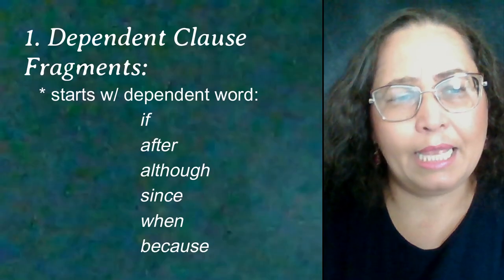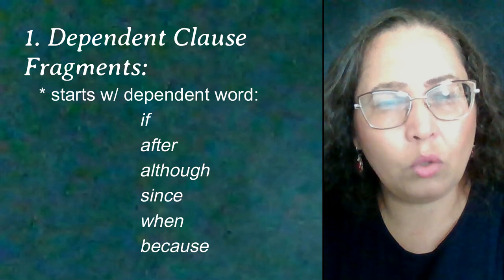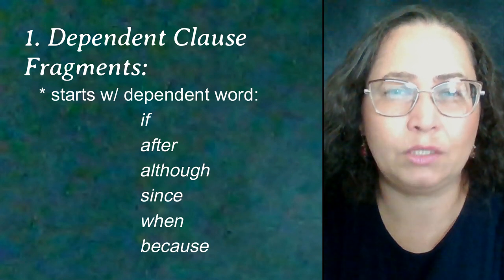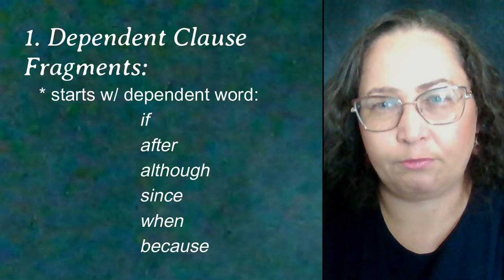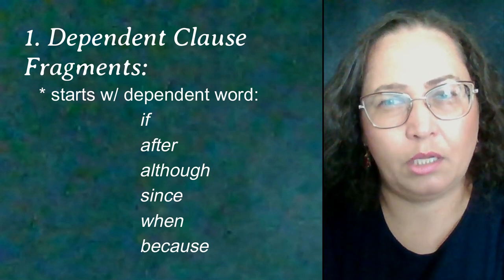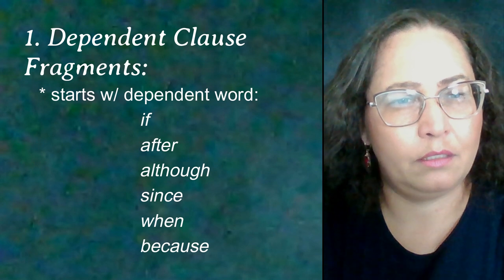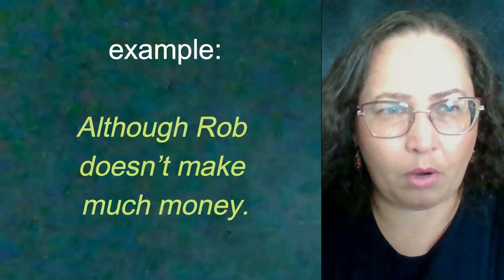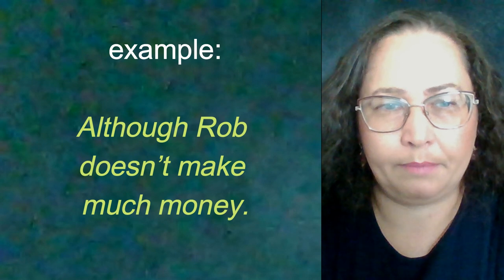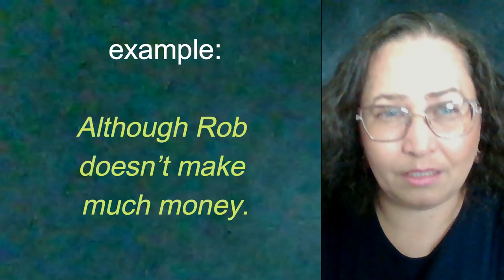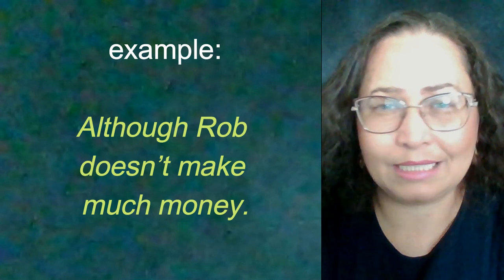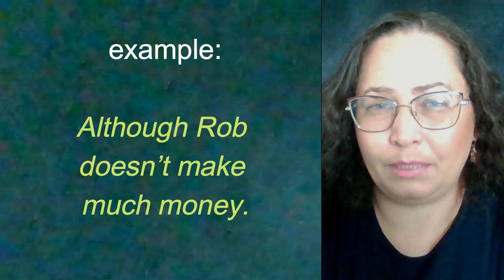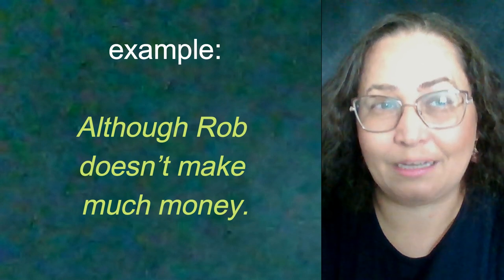Let's start with the first category. A dependent clause fragment always begins with a dependent word such as if, after, although, since, when, and because. For example: 'Although Rob doesn't make much money.' As you see, on its own, this dependent clause does not express a complete thought. Therefore, it is a fragment.